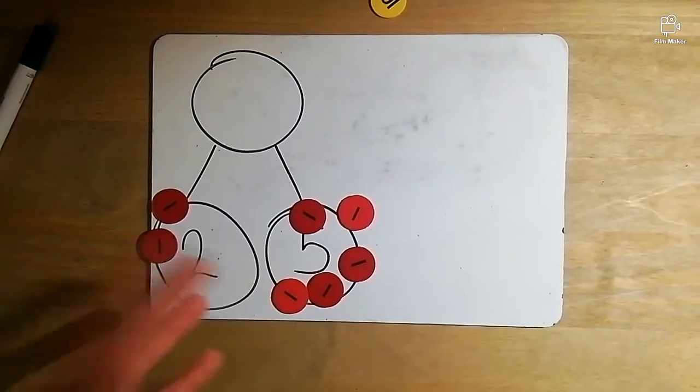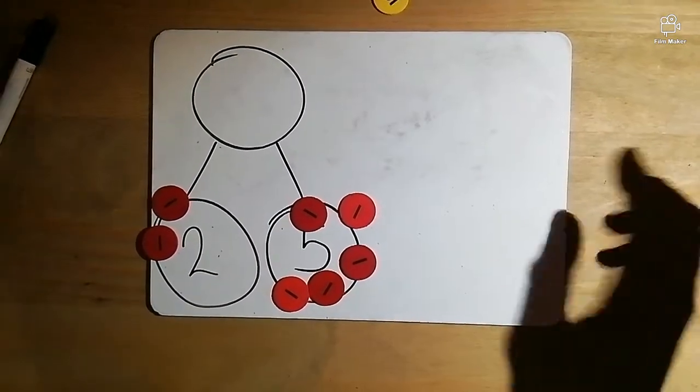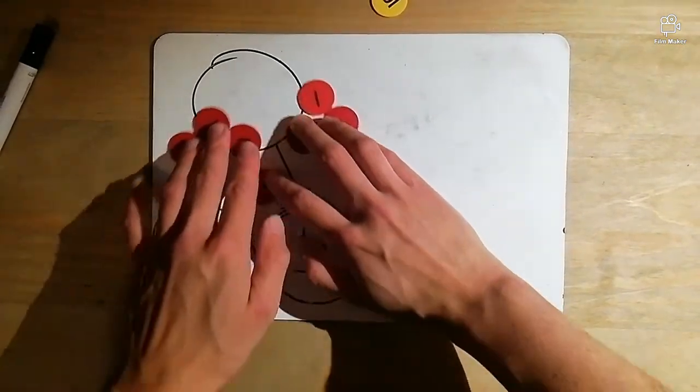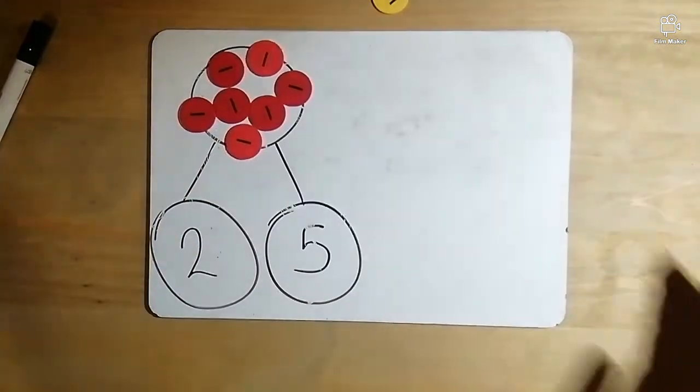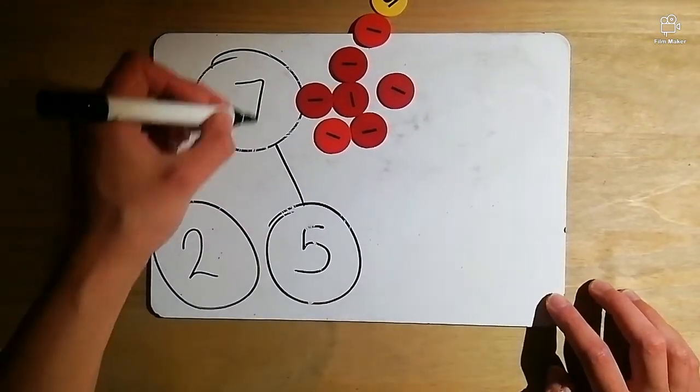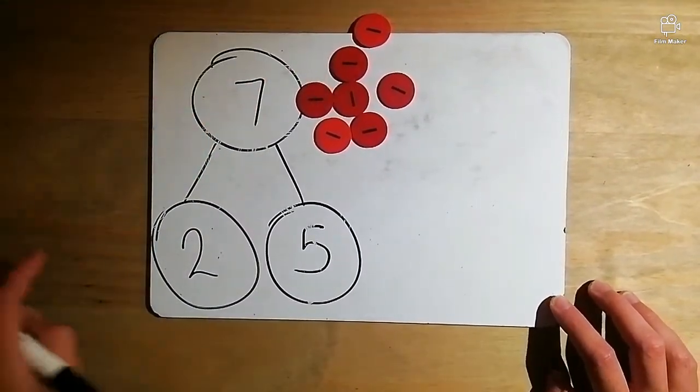We know that when we add two and five it doesn't make 25. It might look like it does but it doesn't. We can move all of these parts into our whole and we can see that two and five make seven.